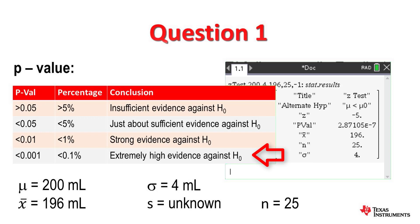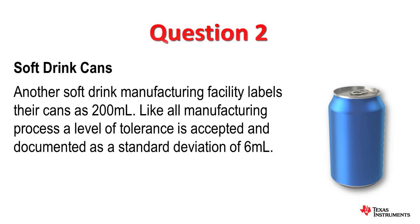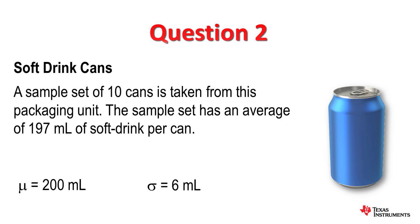Let's look at another question. At another soft drink filling facility for the same company, a can when fully filled is designed to hold 200 milliliters. The standard deviation for the startup population is 6 milliliters. A sample set of 10 cans is taken from this packaging unit. The sample set has an average of 197 milliliters of soft drink per can. Will it be a valid conclusion to suggest that this unit underfills the cans at 5% level of significance?